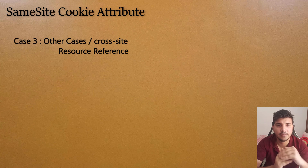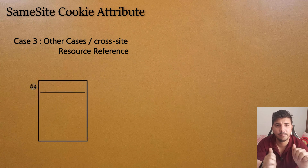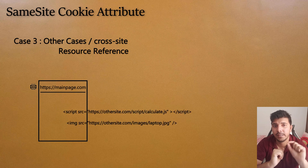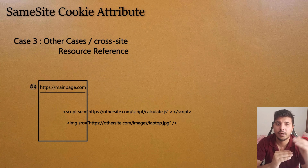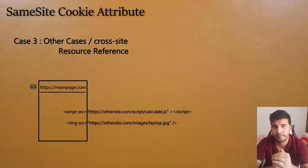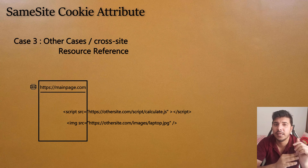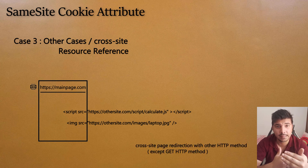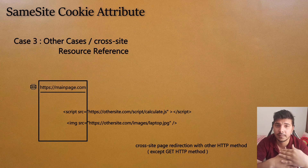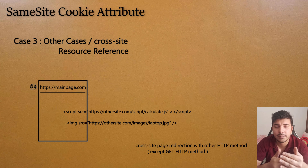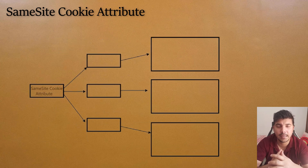The third case covers every other scenario. For example, you are visiting mainpage.com and within that page there is a JavaScript call to othersite.com — note that you are not clicking a link, the page content is being loaded. Similarly, there could be an image tag with src pointing to othersite.com, or a page redirection using a non-GET HTTP method like POST. In general, we call this 'resource reference to another site' or all other remaining cases.